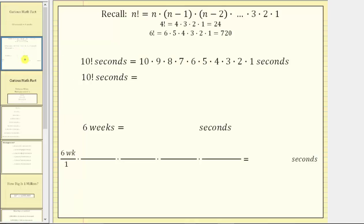For review, here's the definition of n factorial. For example, 4 factorial equals 4 times 3 times 2 times 1, which equals 24. And 6 factorial equals 6 times 5 times 4 times 3 times 2 times 1, which equals 720.